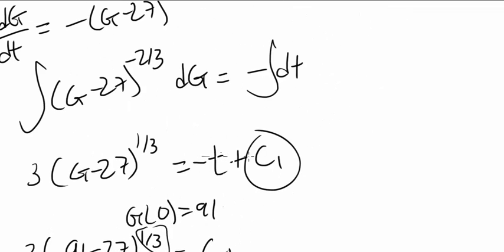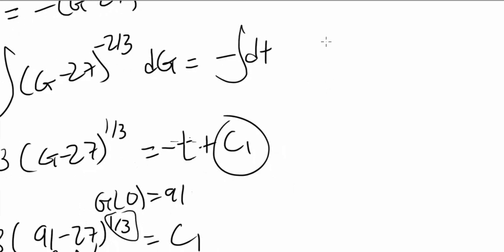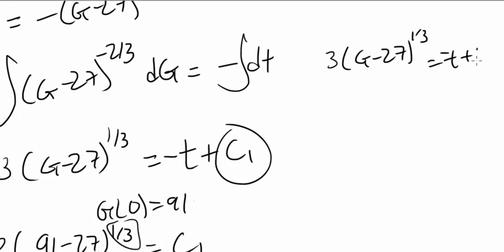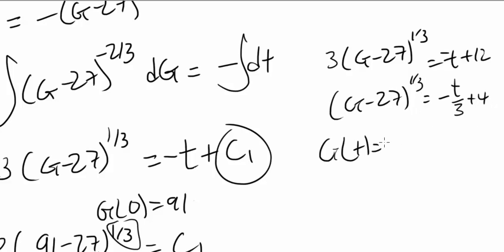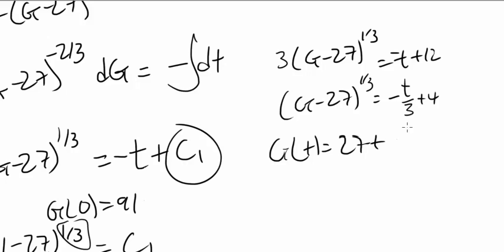So what equation do we get? We get 3 times (g minus 27) to the 1/3 is negative t plus 12. Dividing by 3 gets us (g minus 27) to the 1/3 is negative t over 3 plus 4 and you want to cube that, add 27 gets us g(t) is 27 plus (4 minus t over 3) cubed.